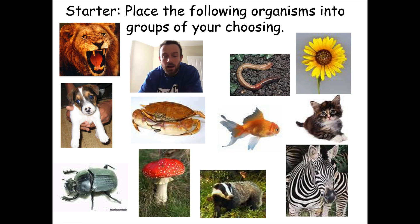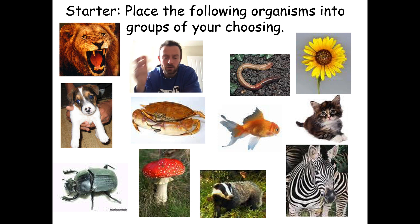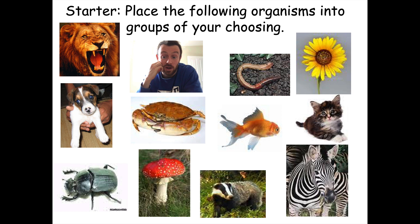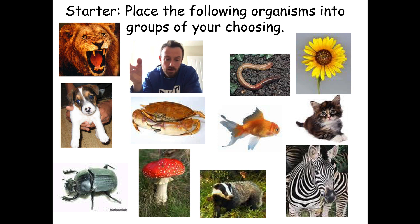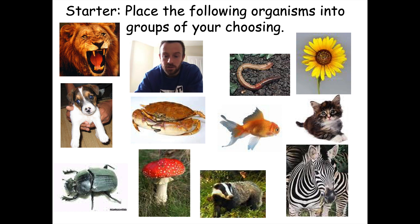To start with, let's think about how you could classify all these different organisms into groups of your choosing. You can include me, a human being, in this group. How might you classify all these living things? Maybe you picked all the things with fur in one group, or maybe the things with legs, or things that grow out of the ground. Maybe you classified the plant and fungus together. All of these ways of classifying things have advantages and disadvantages, so I really want you to start thinking about how to do this systematically.